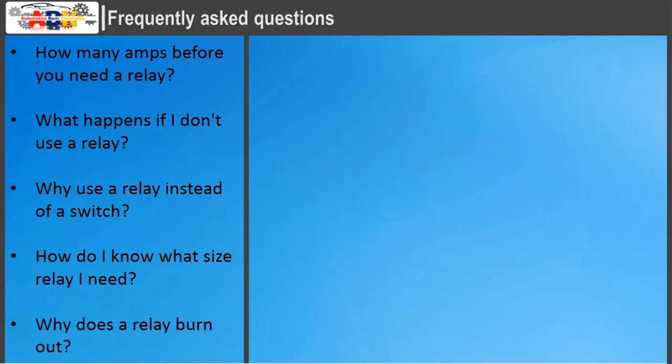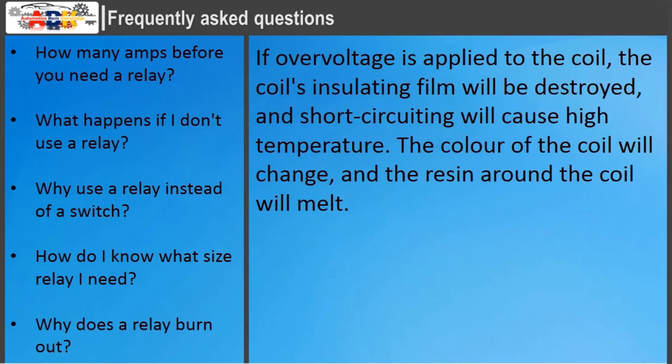Why does a relay burn out? If overvoltage is applied to the coil, the coil's insulating film will be destroyed and short-circuiting will cause high temperature. The color of the coil will change and the resin around the coil will melt.